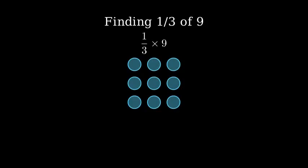Let's visualize this with nine circles. Here are our nine circles that we want to split into three equal groups. To find one-third, we need to divide these circles into three equal groups.